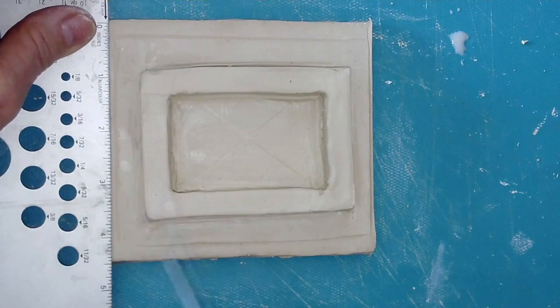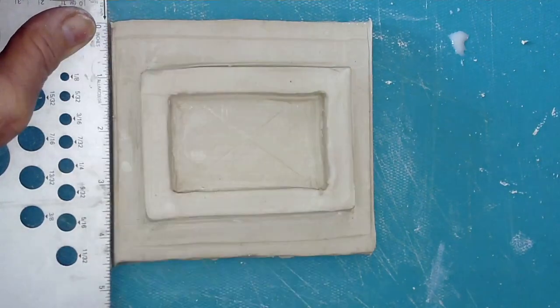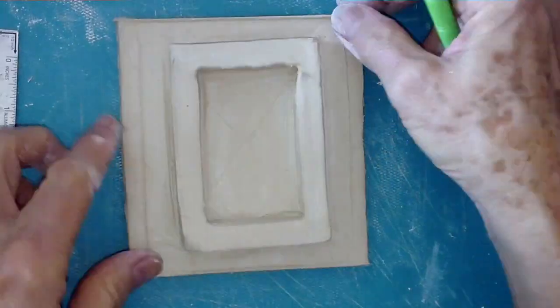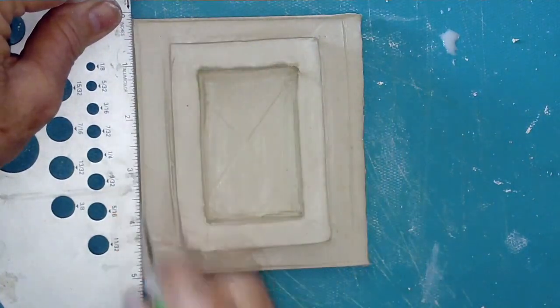And notice that I'm not actually cutting exactly the line, but I'm cutting a little bit on the outside of the line so that there's a slight overhang of the box, or sorry, of the lid on the box.